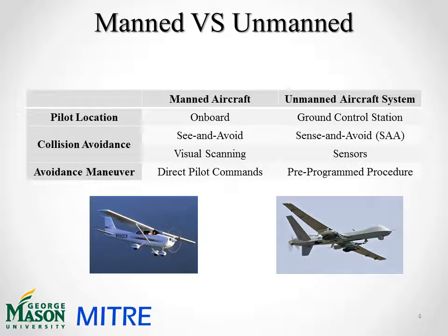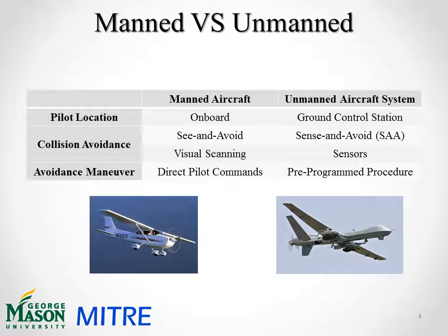I'd like to go over a few of the main differences between manned and unmanned aircraft systems. The largest difference is the pilot's location — on board for manned aircraft, at the ground control station for unmanned. In a manned aircraft, the pilot can perform collision avoidance through visual scans through the system commonly called see and avoid, and execute avoidance maneuvers through direct command. In an unmanned aircraft system, even when the link is good, it must rely on sensors to perform collision sensing and determine if a sense and avoidance maneuver is necessary. When the link is severed, all avoidance decisions must be performed through pre-programmed procedures. All this comprises the sense and avoid, or SAA, system.